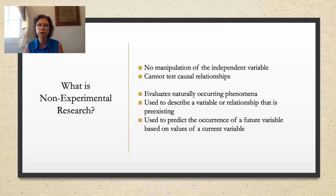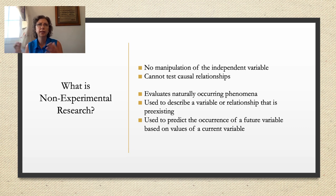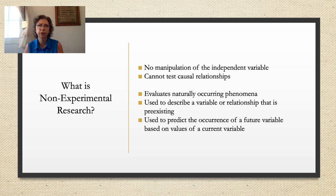Non-experimental research is used when the question is not about a causal relationship, or the study cannot meet the requirements of a true experimental design. That happens often — sometimes it's just not feasible or ethical to manipulate the IV. These designs are used when the research question is about presently occurring thoughts, feelings, or actions, evaluating naturally occurring phenomena. It's used to describe a variable or pre-existing relationship that we could not manipulate, or to predict the occurrence of a future variable based on current values. There are times when a researcher's question is more about describing what is happening rather than explaining why a behavior happens.